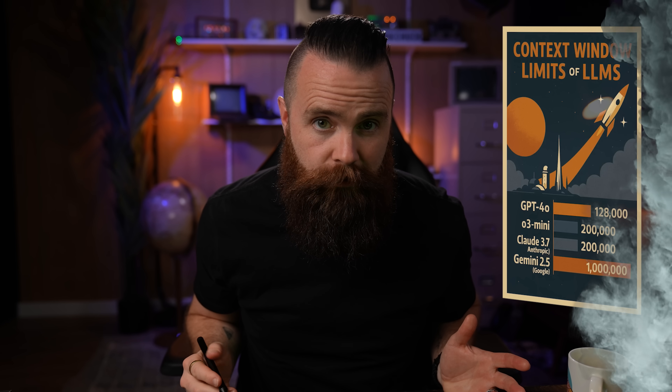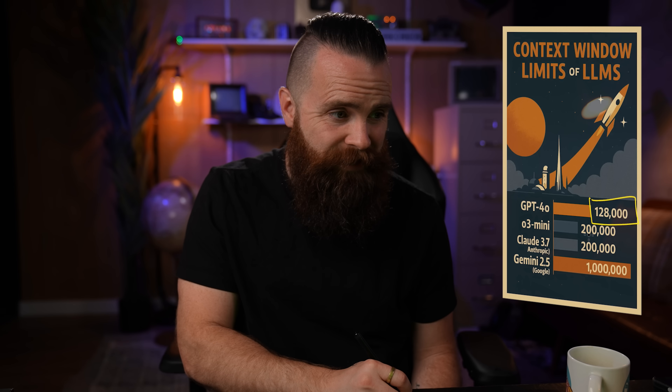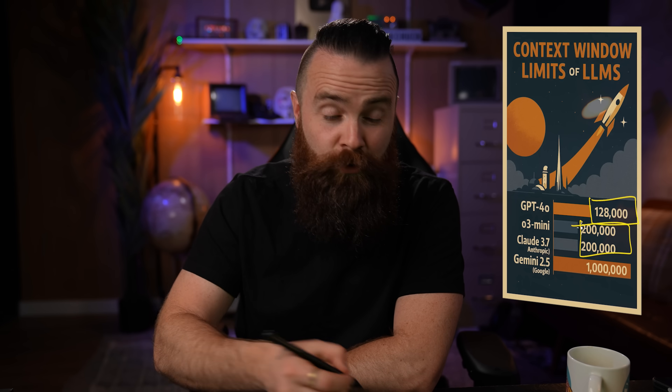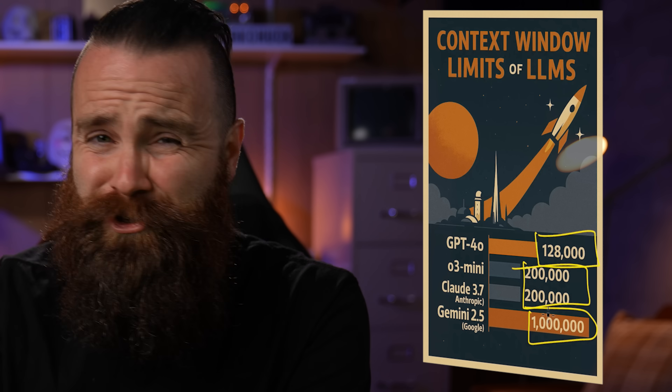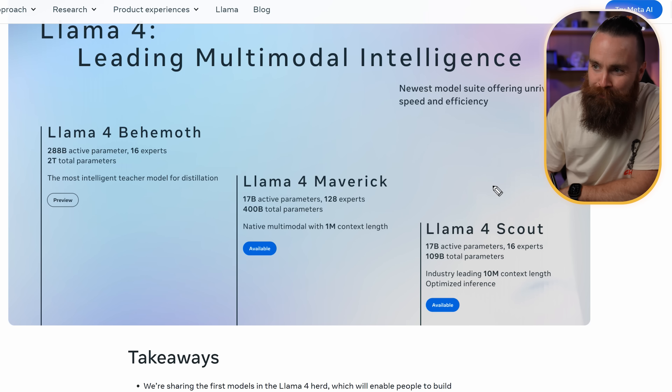With cloud models, that's a whole different story. You can use their full advertised context windows, and they've got some big ones. GPT-4o is rocking 128,000 tokens. Claude 3.7 — 200,000. And then Gemini 2.5 from Google — 1 million tokens. Tell them your whole life story and it's going to remember it. They're saying 2 million is right around the corner. And Meta just released Llama 4 Scout, which has a 10 million token context window — that's a local model. That's crazy.